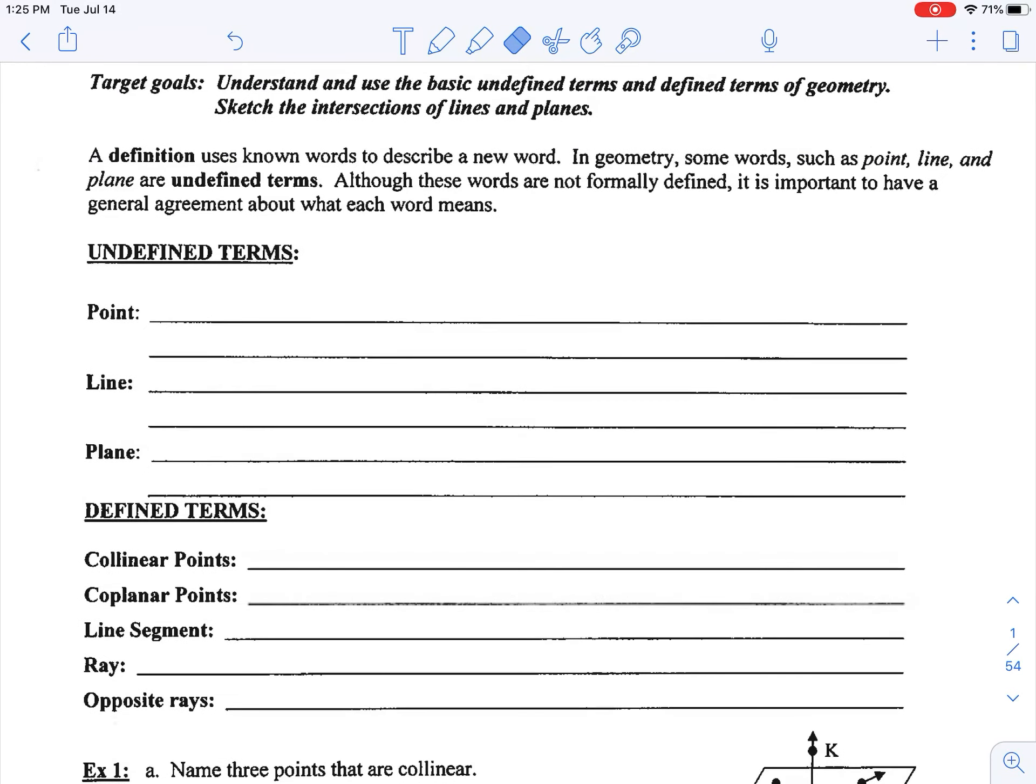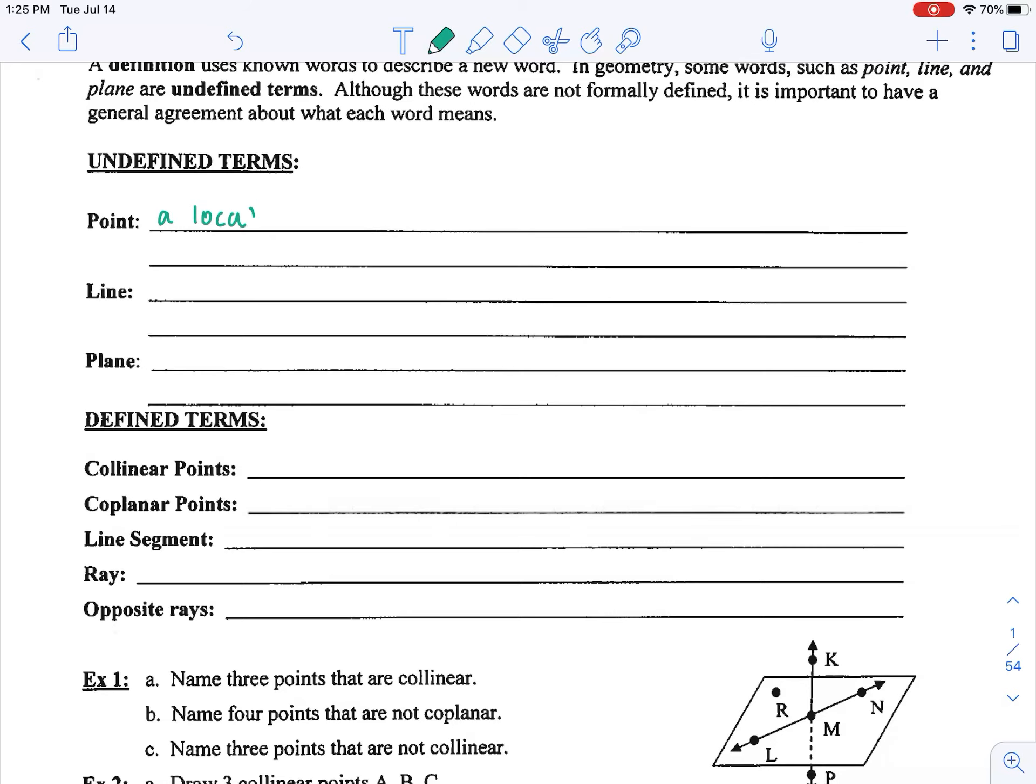Point is representative of a location and as such has no size or length associated with it. We would represent it by a dot and name it using a capital letter.